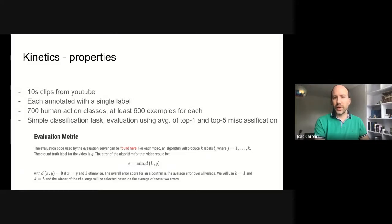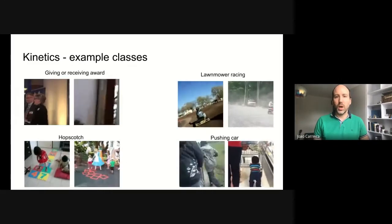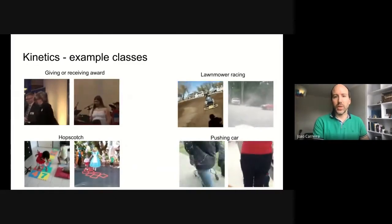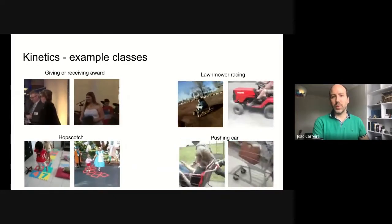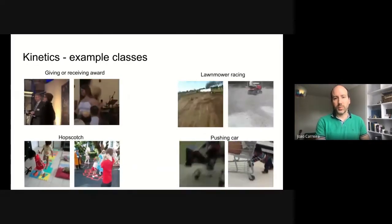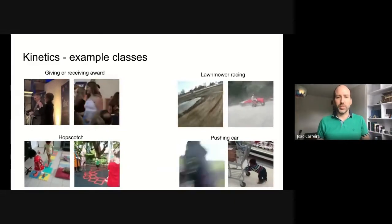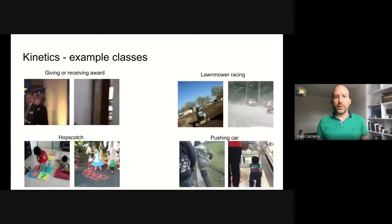We use the top 5 error because some human action classes tend to co-occur with others. In those cases, there is not a single label that is correct, and so we are happy if our ground truth label is in the first five predictions made by a classifier. Our list of 700 classes is wide-ranging and includes, for example, giving or receiving award, lawnmower racing, hopscotch, and pushing car.